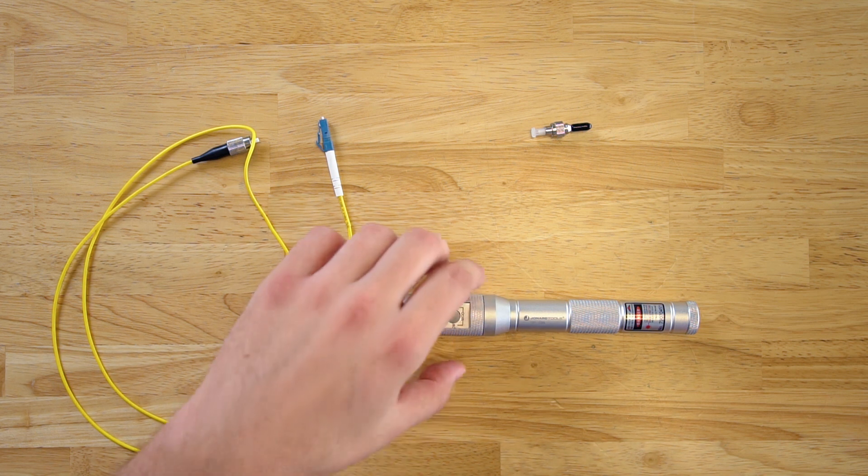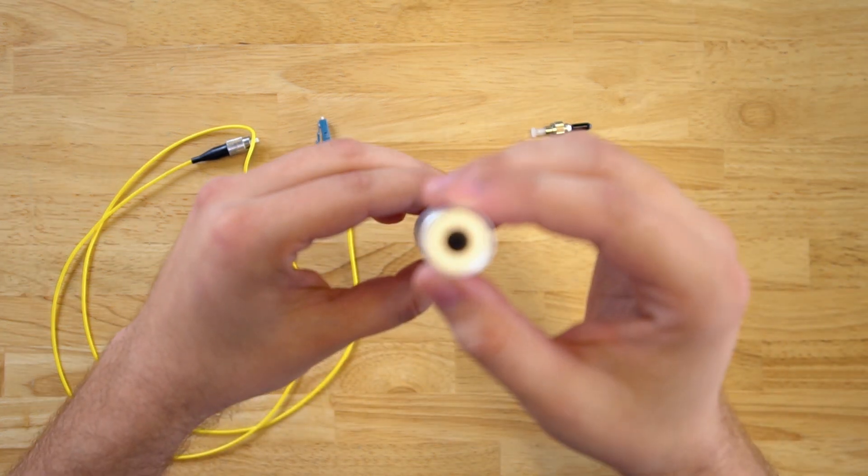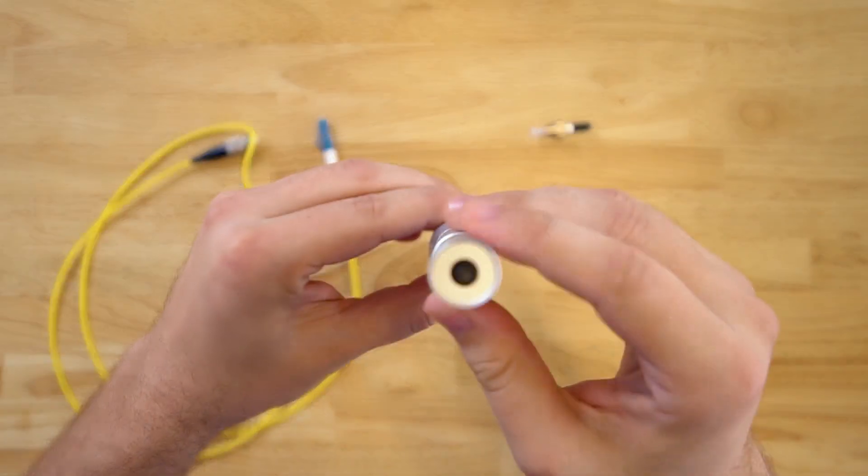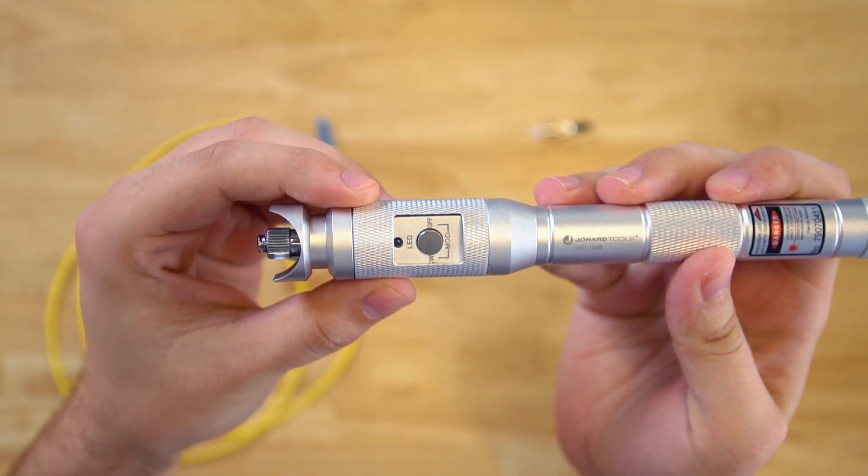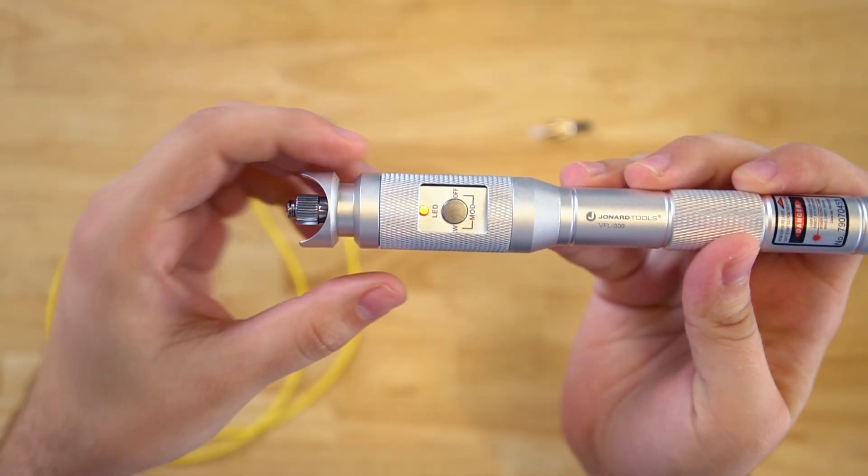To use the VFL 300, first press the on-off switch on the bottom of the unit to turn it on. Next, press the mode button to turn the laser source on.